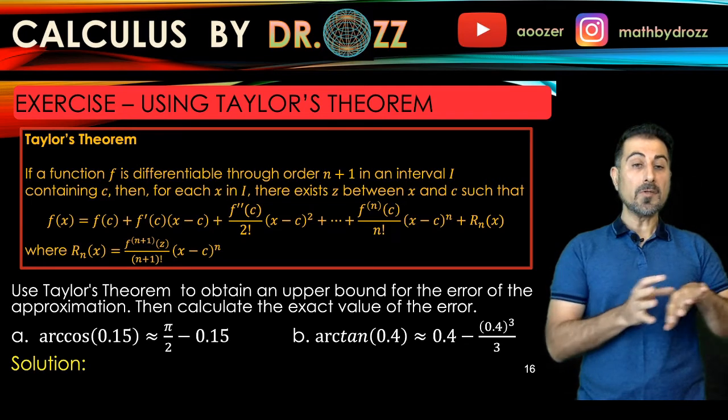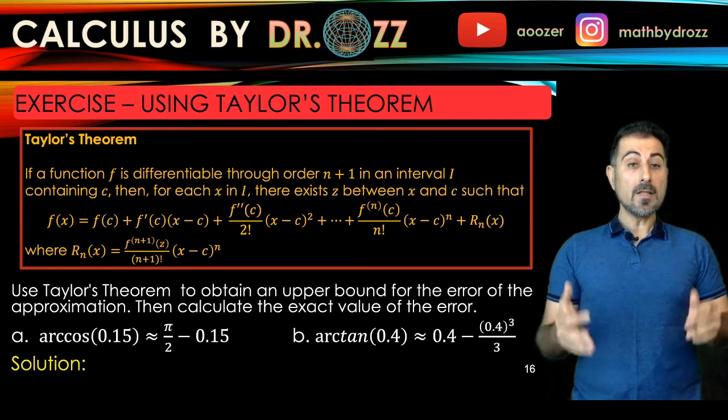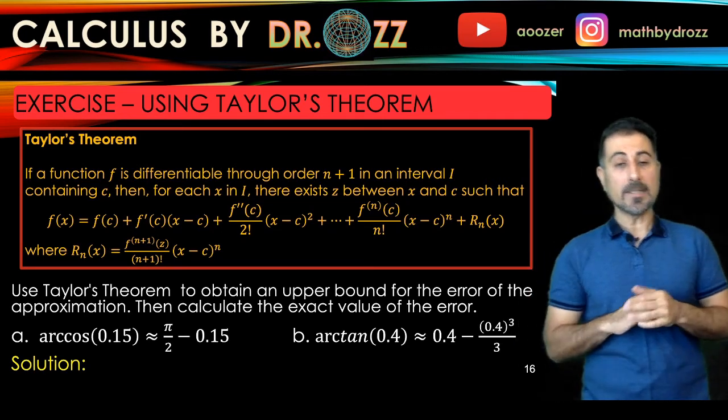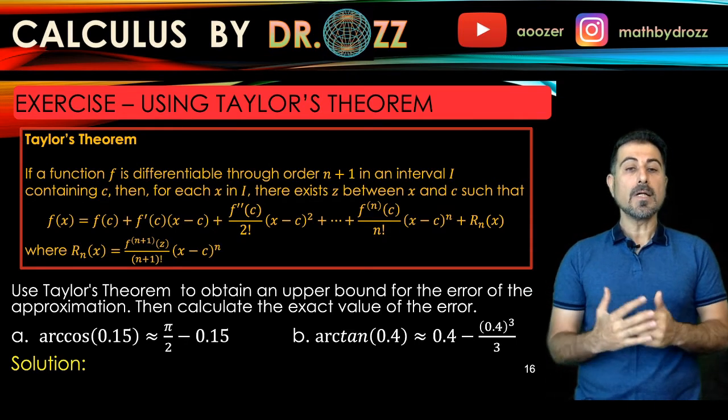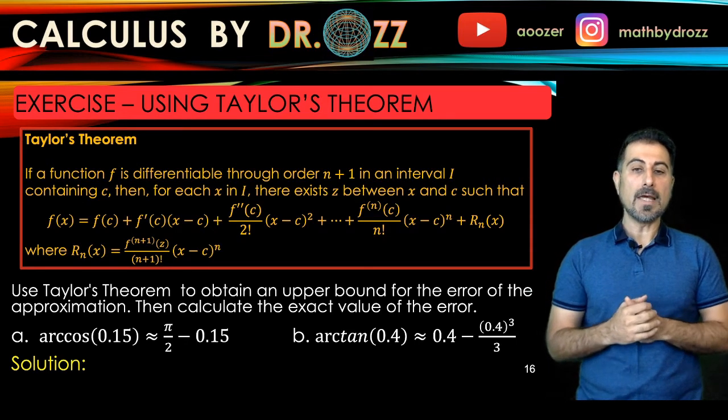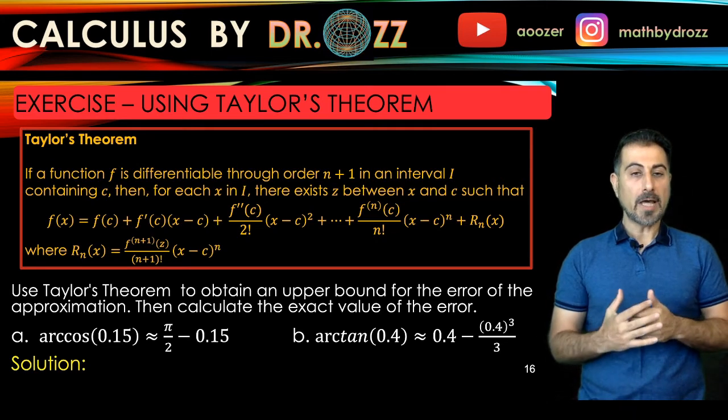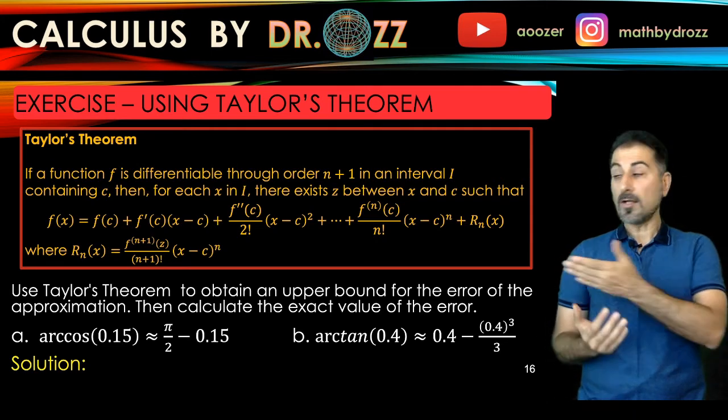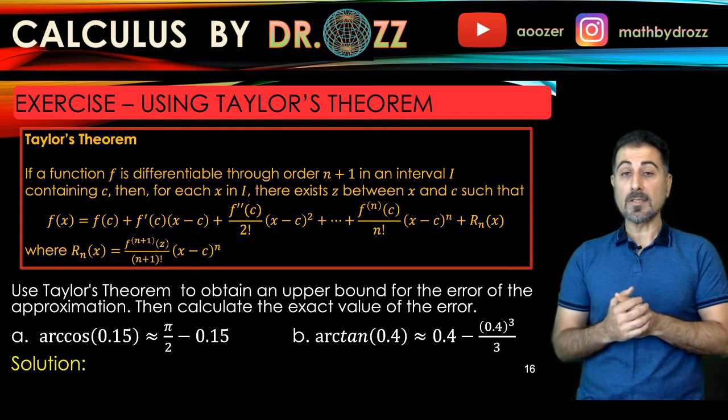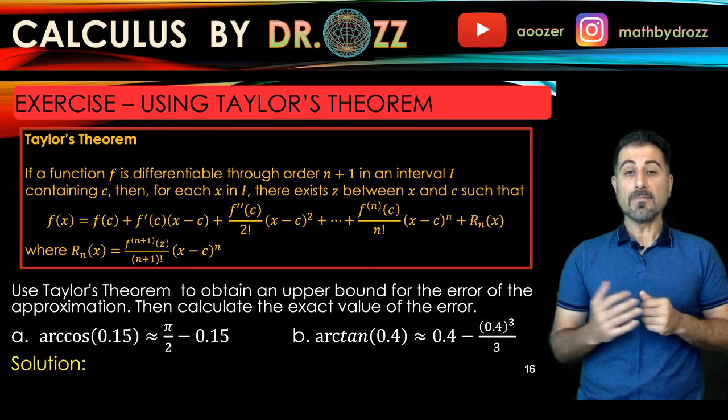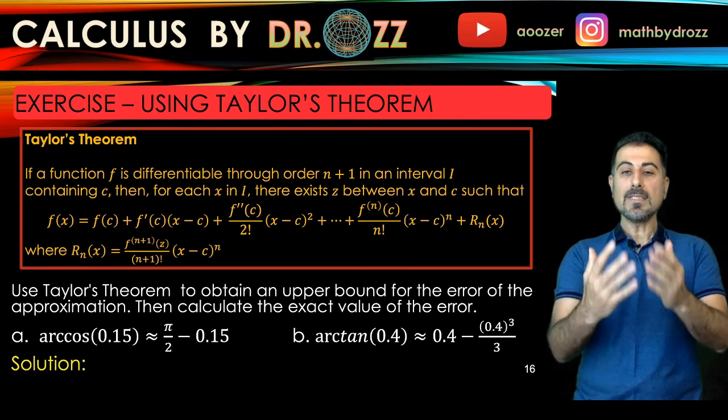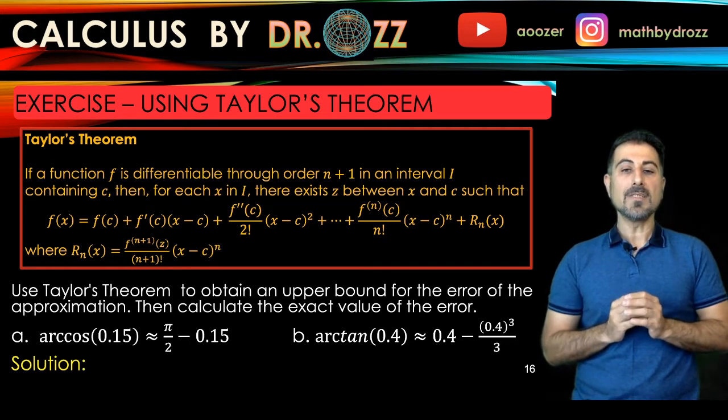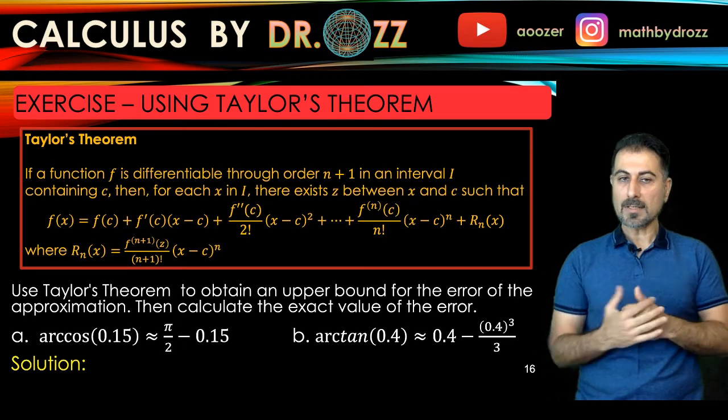So here what we throw away is called R_n, the tail of the Taylor polynomial. That's an infinite series itself. And this Taylor's theorem allows us to make an estimate for the error. As you see, R_n has a very explicit description. In fact, it's written in terms of the n plus first derivative evaluated at z. And here z is a number between c and x. So we will practice that.